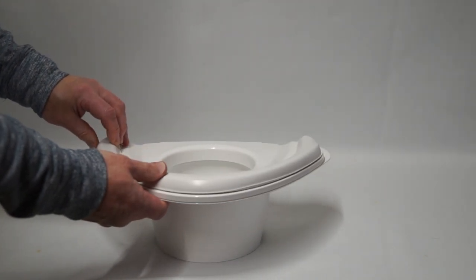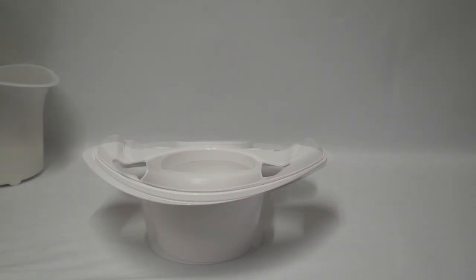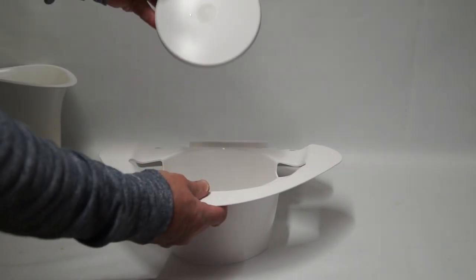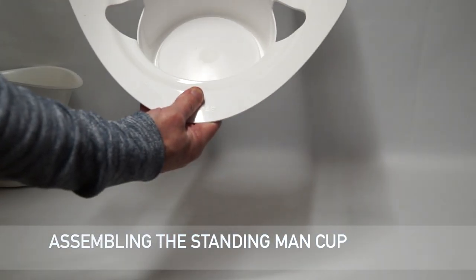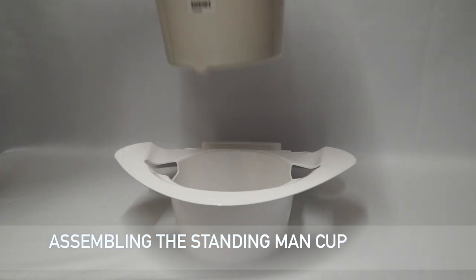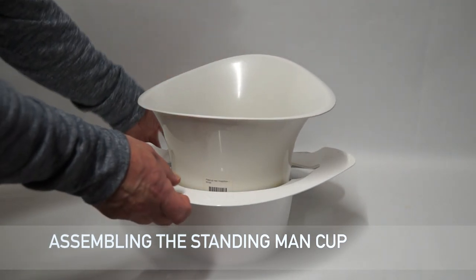If the unit is being set up for a man to use, the standing man's cup is selected. This is placed on top of the Uroflow meter. The whole assembly is then placed on top of the toilet and is ready for use.